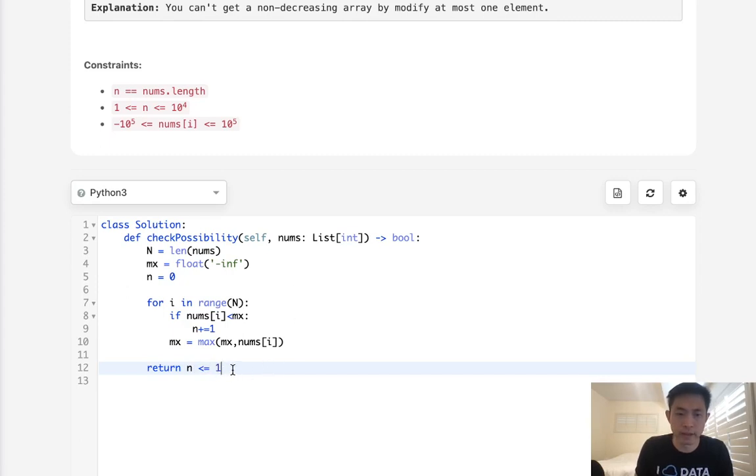Because if it's less than or equal to 1, that means this can be changed by just changing one number. But there is an edge case. Say that we had a number like 100 and then 1, 2, 3, 4, something like this.